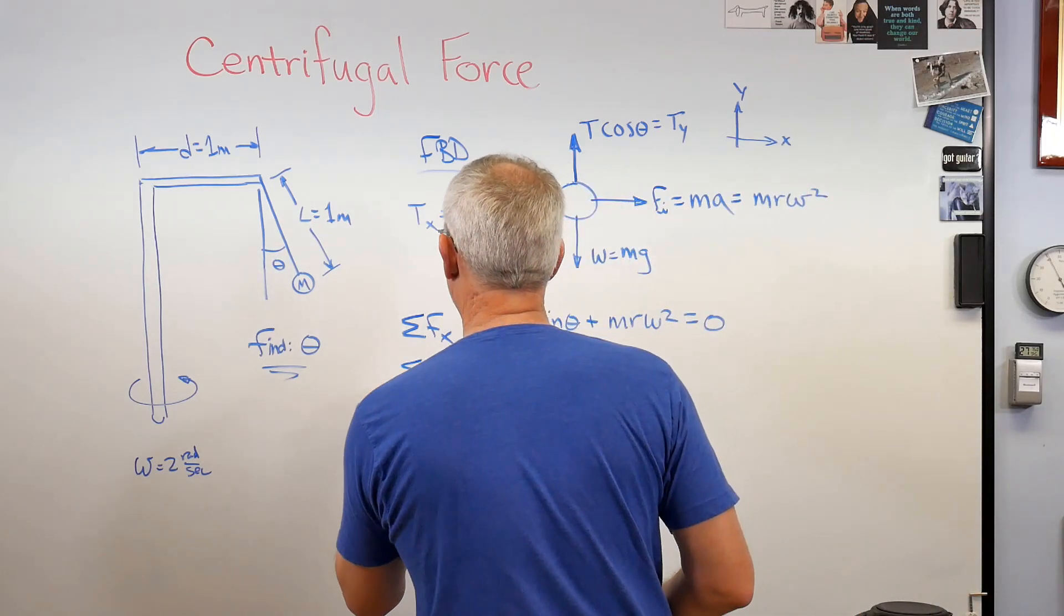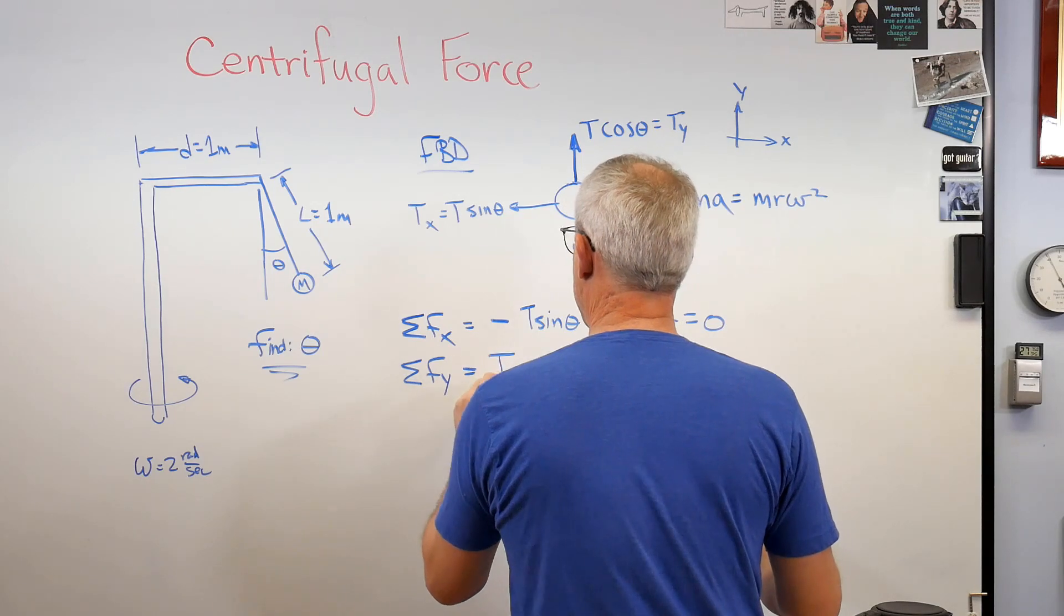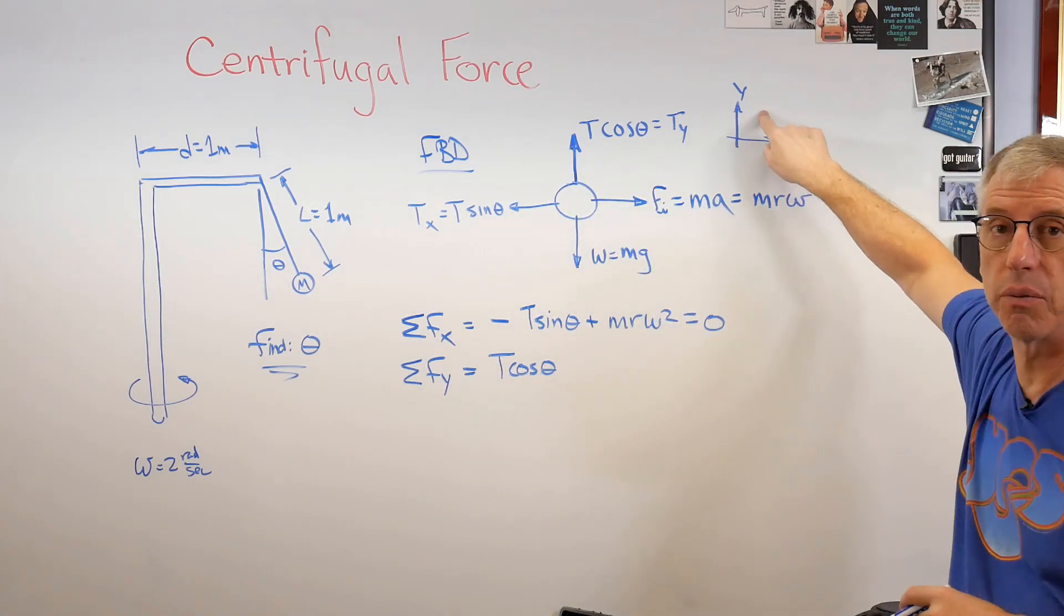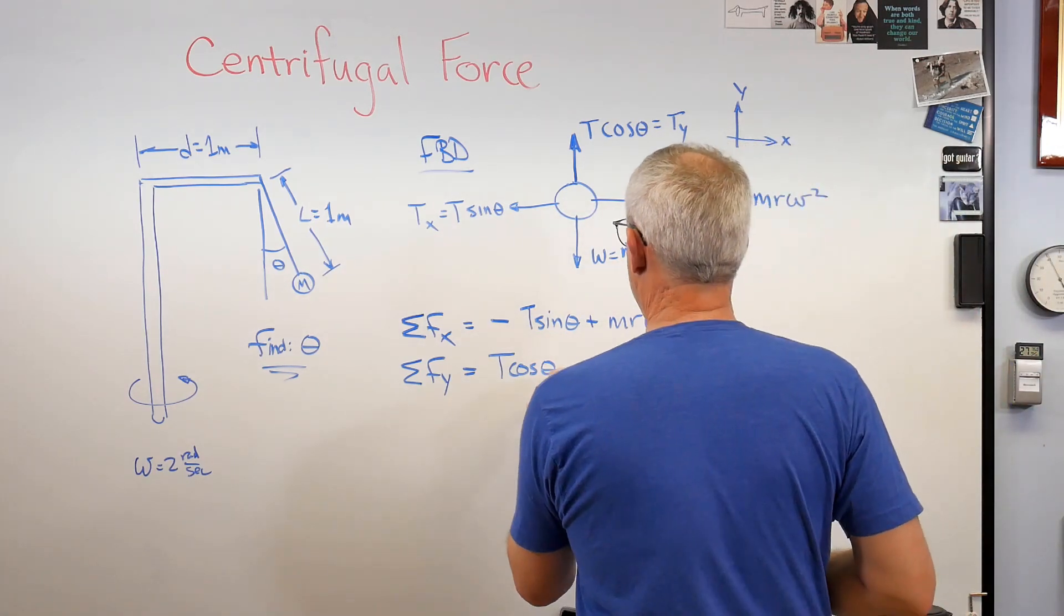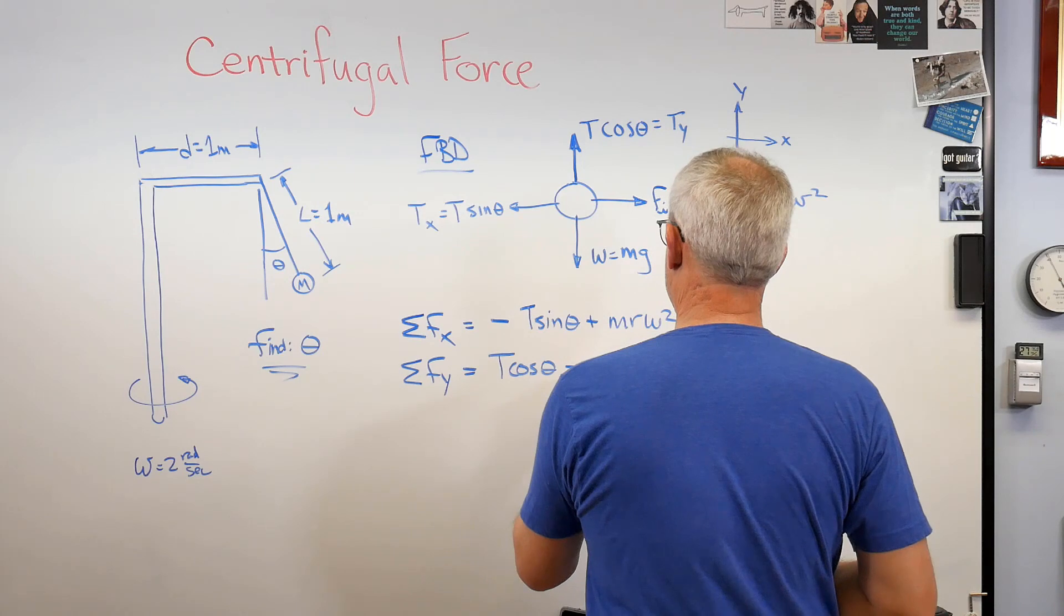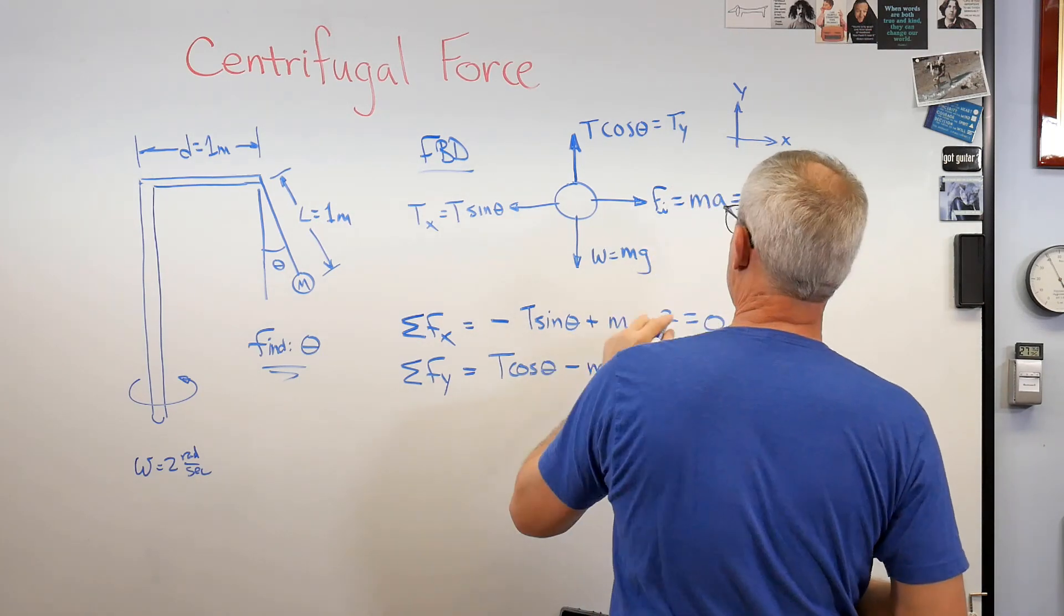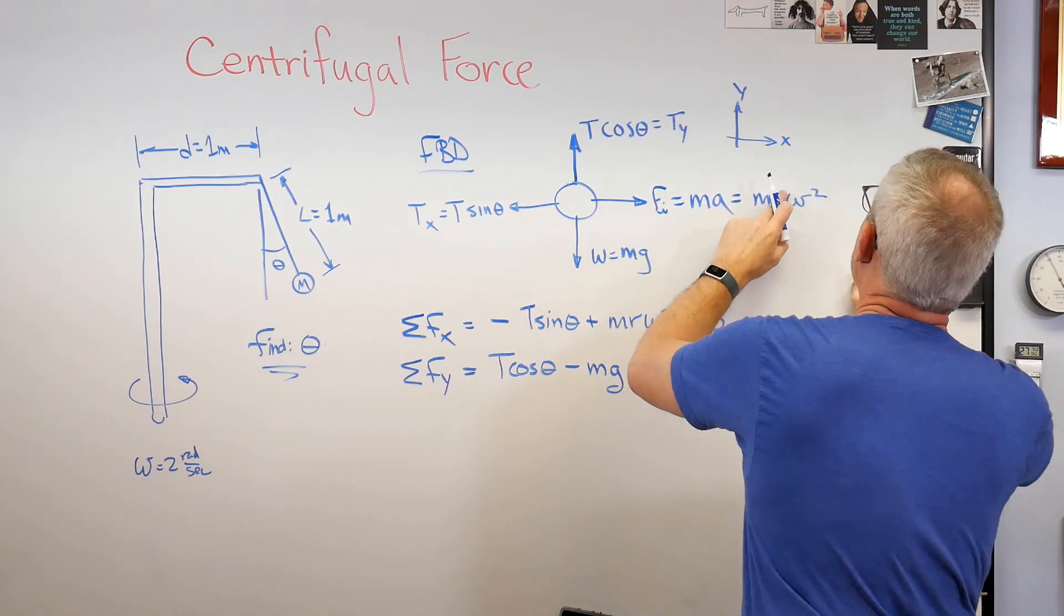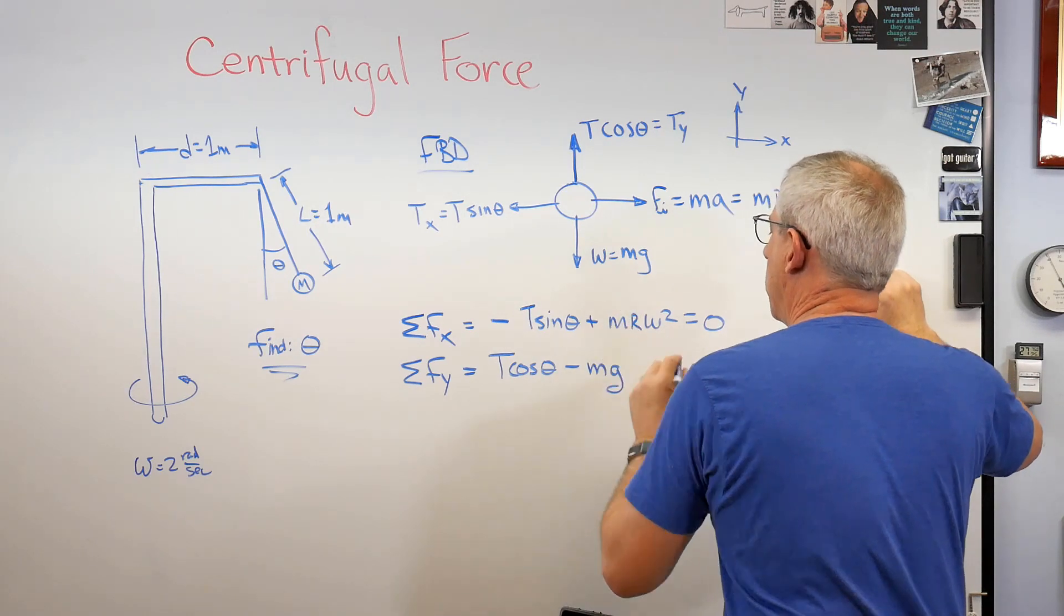Now let's do the sum of the forces in the y direction. Let's see. T cosine theta. That's up. And so that goes along with our positive sign convention there. Minus mg. Let's see. Well, I'm sorry. I went from capital R to little r. Let me fix that just to be consistent with what I wrote before. There. That looks like that.